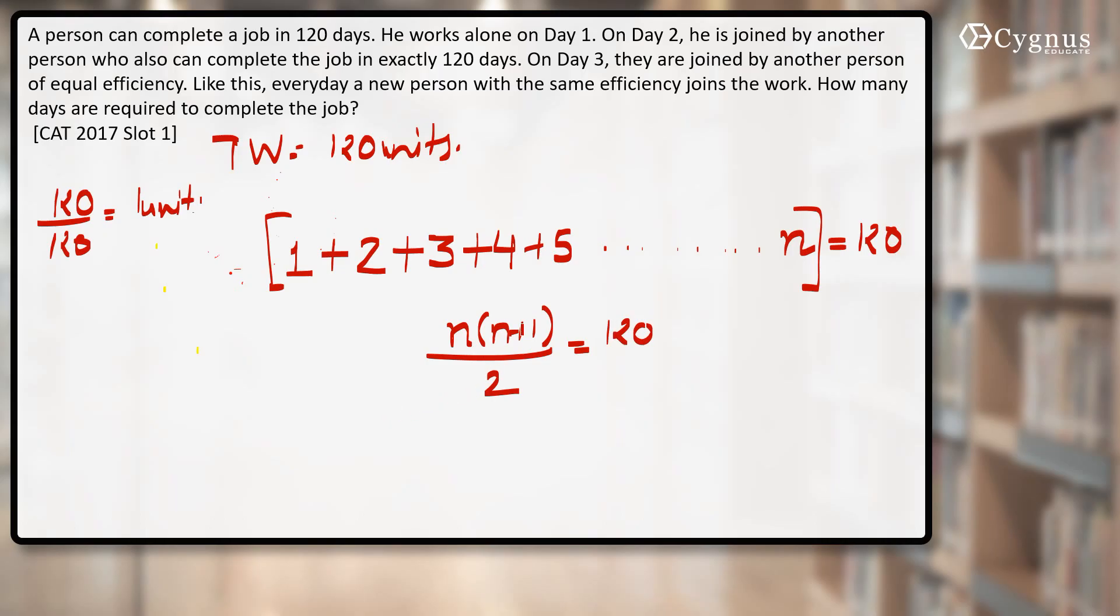Now what should be the value of n? By hit and trial, I can say that n should be equal to 15. Let's cross-check it. If you put n equal to 15, this becomes 15 into 16 by 2.